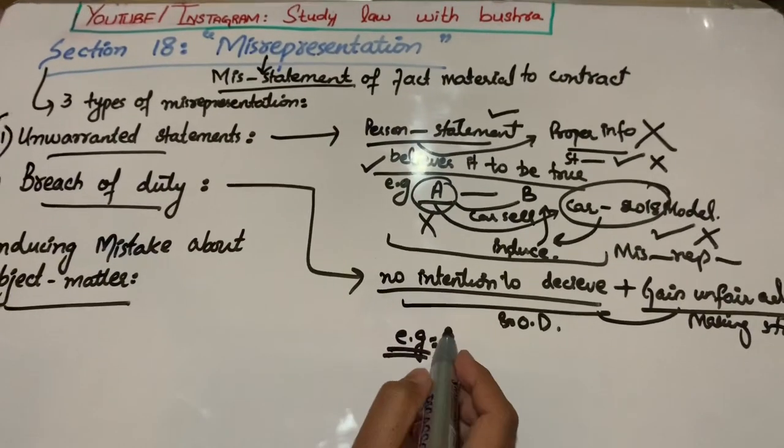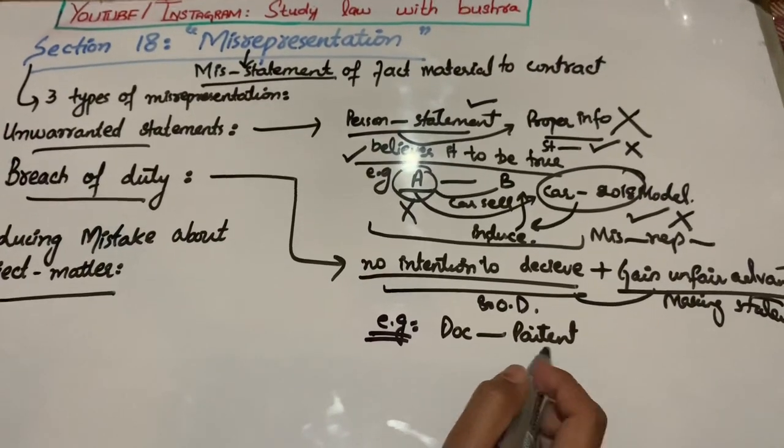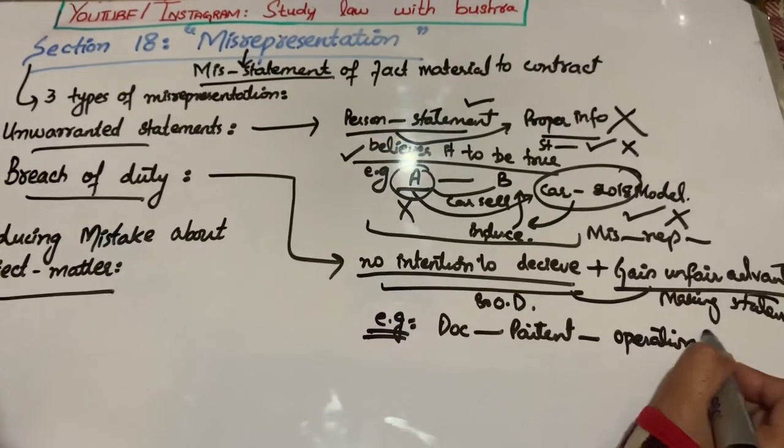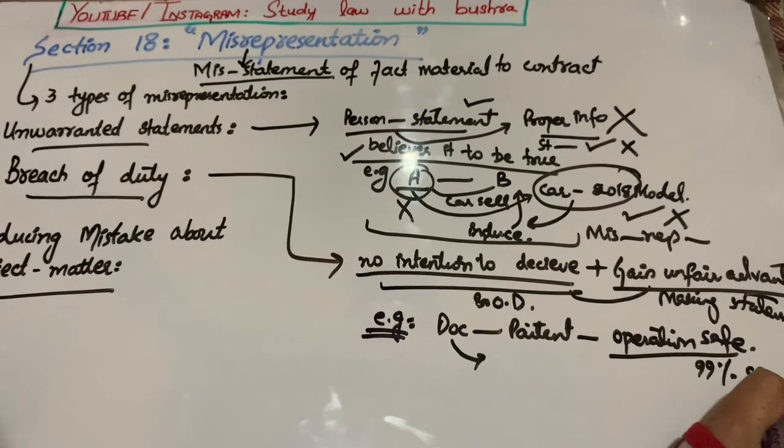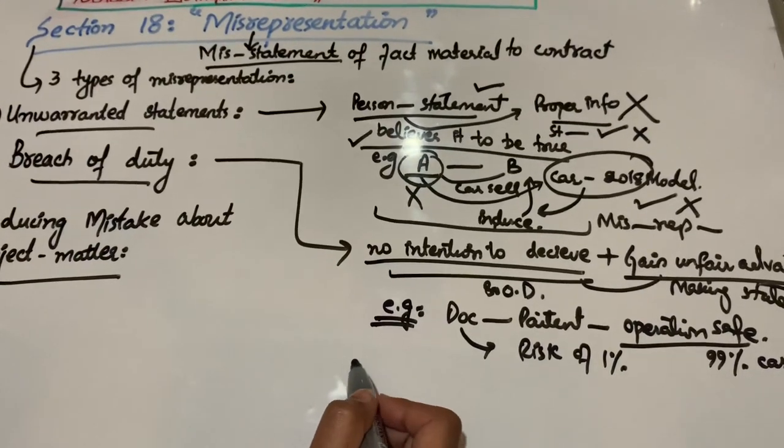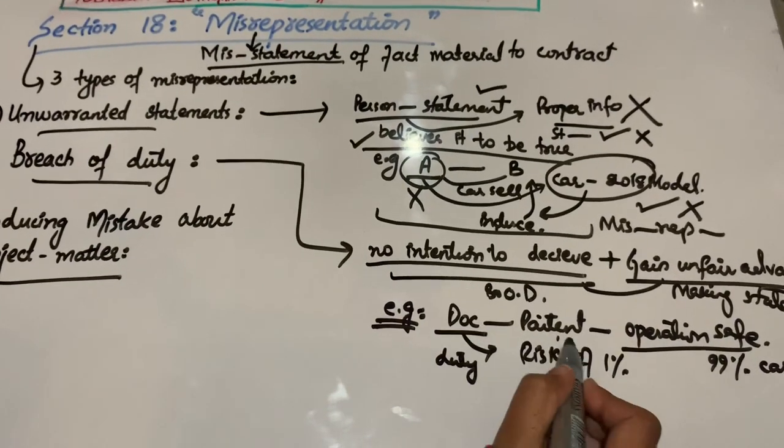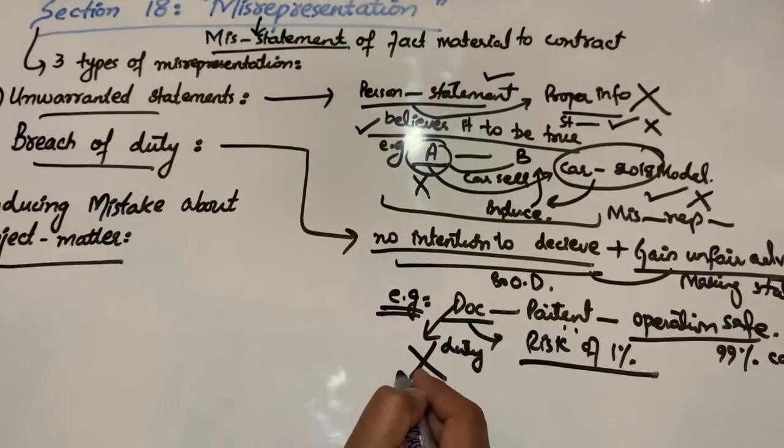اس کو ہم ایک example سے سمجھتے ہیں. جیسا doctor اپنے patient کو بتاتا ہے کہ جو operation میں تمہارے اوپر perform کرنے جا رہا ہوں وہ safe ہے. لیکن reality میں وہ operation 99% cases میں safe ہے لیکن اس میں 1% کا risk ہے. اب یہاں doctor کی duty تھی کہ وہ patient کو اس 1% risk کے بارے میں بتائے.